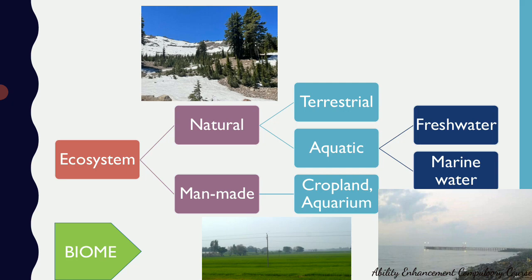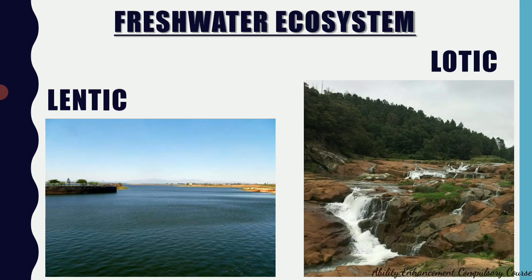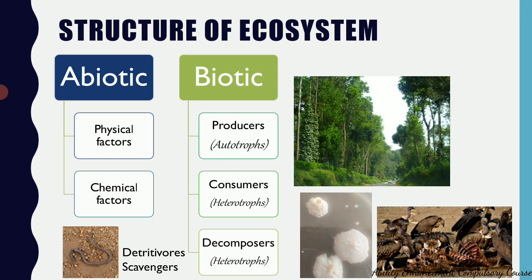That was a brief classification of ecosystems — natural and manmade. Now, in an ecosystem there are several components — mainly two: abiotic, which is the non-living component, and biotic, which is the living component. This can also be asked in exams as the structure of ecosystem, so structure of ecosystem or components of ecosystem requires you to write about abiotic and biotic factors.